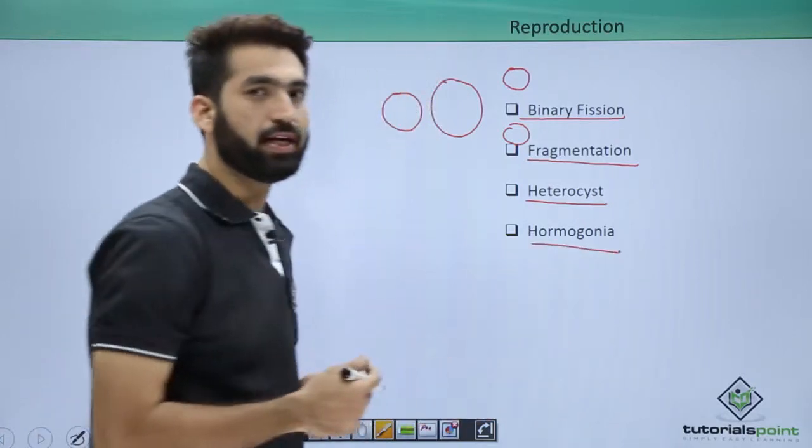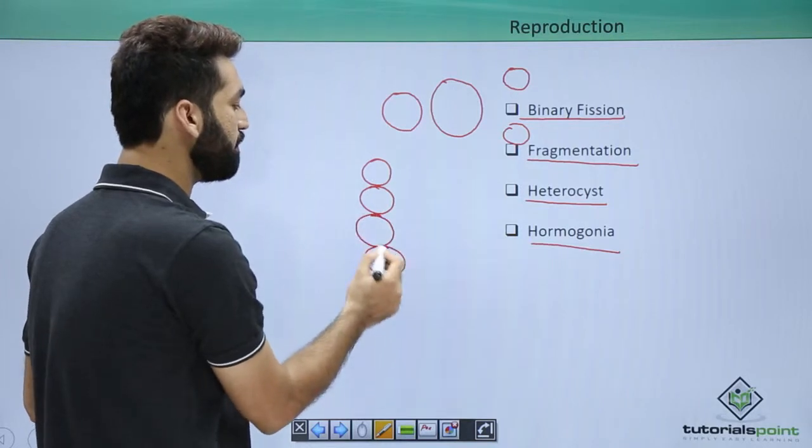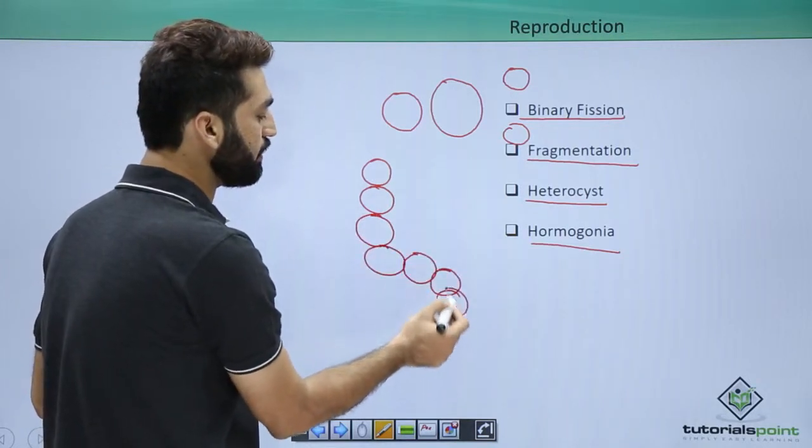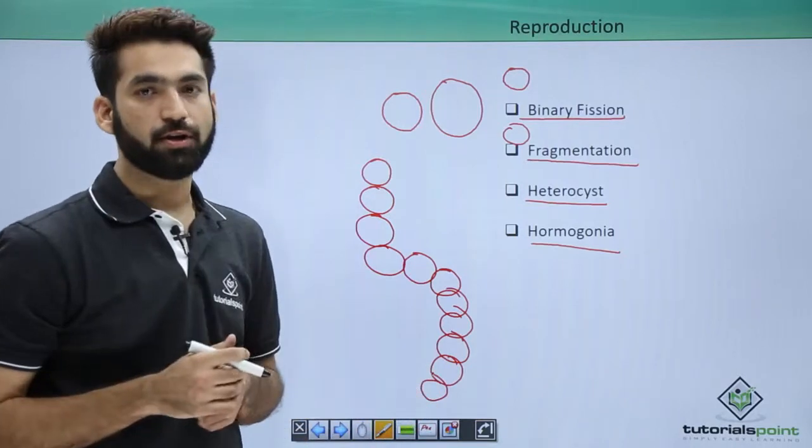What happens in homogonia? Let's suppose you have a cyanobacteria filament. This filament of cyanobacteria is also called a trichome.